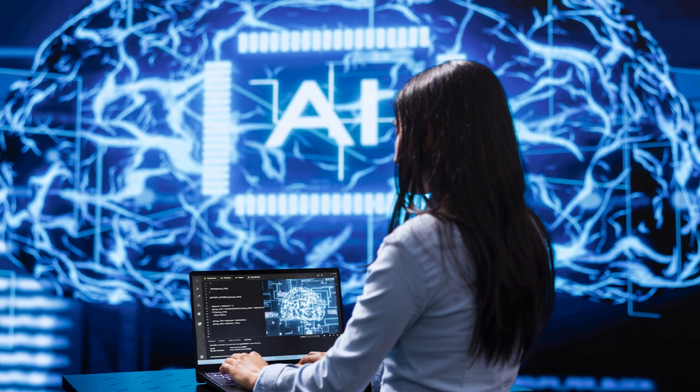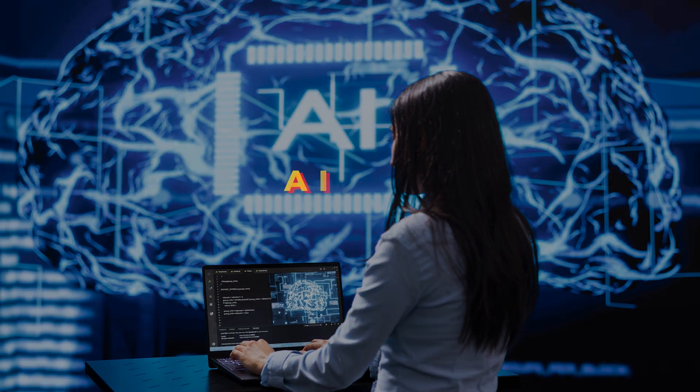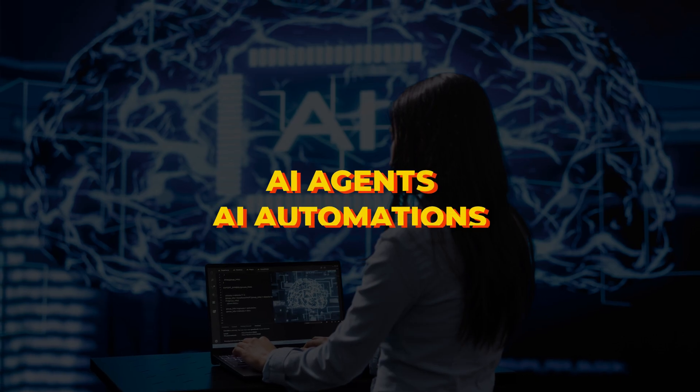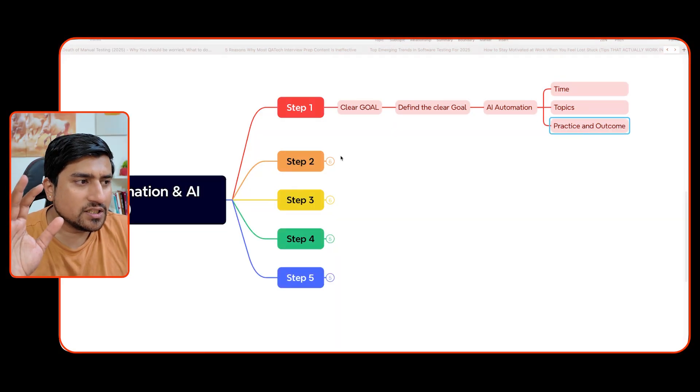So let's get started. First of all, you have to have a clear goal in mind. What do you need to learn? We are talking about AI agents and AI automation - how you can leverage AI especially into your automation projects. Make sure you know how much time it takes, what the topics are, and what the products are out there right now.